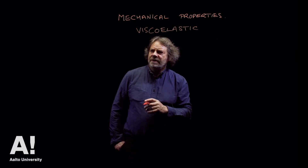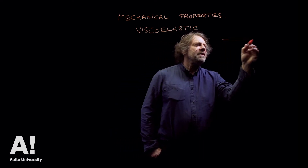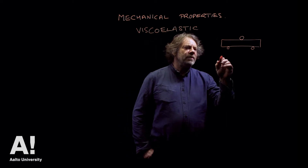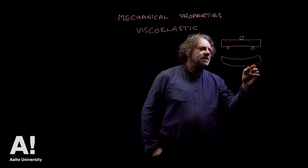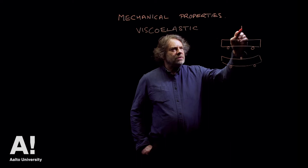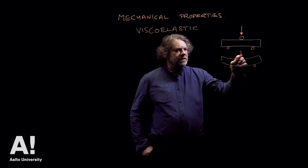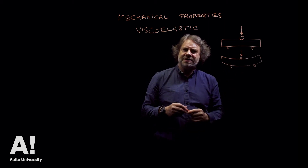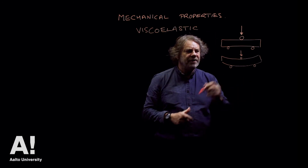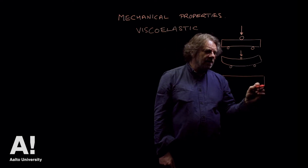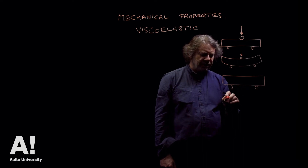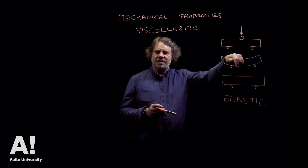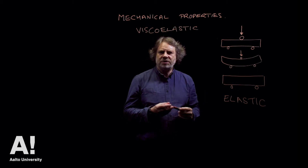If we have a wooden beam and that beam is applied under load — doing a three-point load here — the beam will deform as a consequence of the load. The load is being applied and the beam is deforming, because every action has an opposite and equal reaction. If it didn't deform, it wouldn't be able to react to the applied load. Once we remove the load, the material returns to its original shape — that behavior is called elastic behavior.